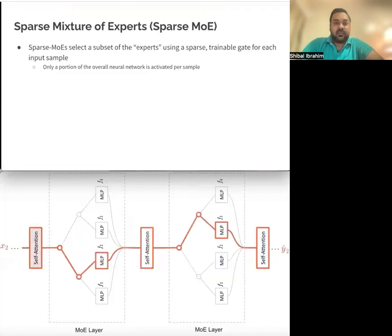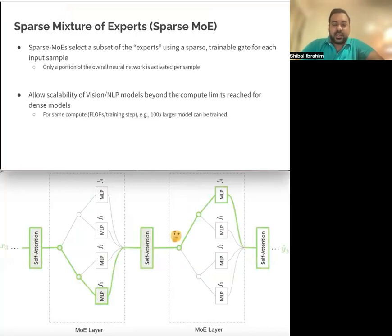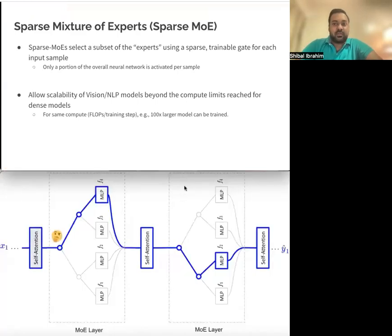Sparse mixture of experts is a learning framework where a subset of the network is activated for each input example through a sparse trainable gate. This learning framework has been used to scale vision and natural language processing models beyond the compute limits reached for dense models. For example, for the same compute, a much larger model can be trained.